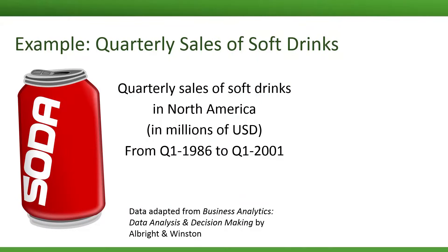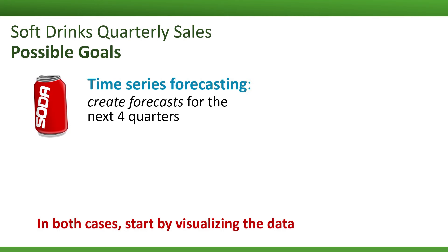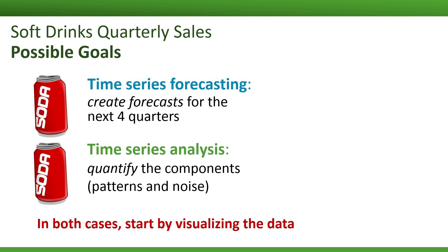Let's look at an example of quarterly sales of soft drinks in North America. We have data from the first quarter of 1986 all the way to the first quarter of 2002. We might have two different goals when we're using these data. One is a forecasting goal, for example, we might want to create forecasts for the next four quarters of this series. A different type of goal might be what we call time series analysis, where we're interested in quantifying the different components of this series, such as what kind of seasonality is there or has there been a trend. These two goals are very different, but in both cases we would always start with visualizing the data.